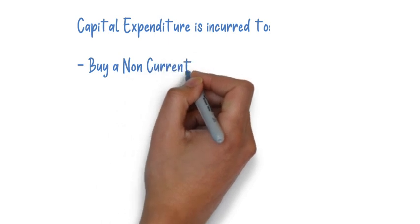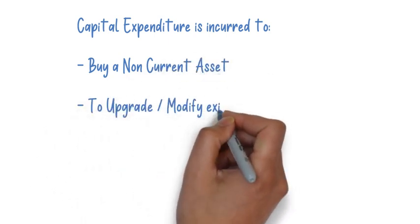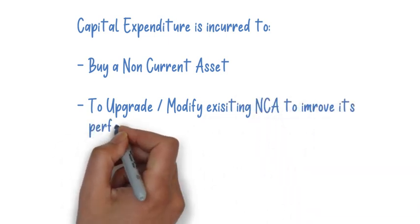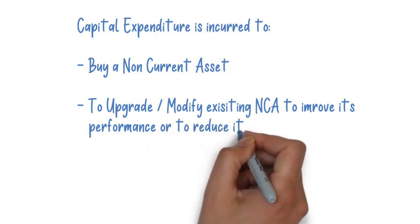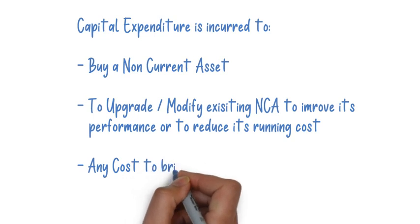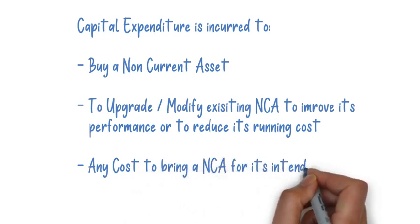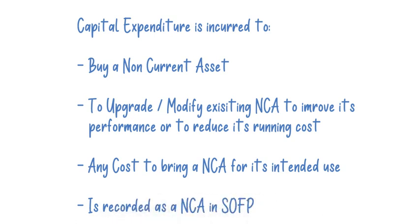Capital expenditure is any expenditure to buy a non-current asset. Any asset that has more than one year of life is a non-current asset and it has a permanent nature. Capital expenditure also includes any expenditure to upgrade or modify that asset so as to improve its performance or reduce its running cost — for example, upgrading a PC's memory or hard drive.